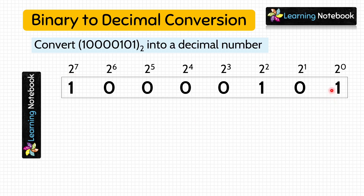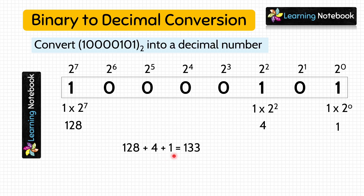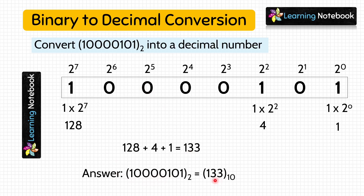Next, we multiply each digit by its place value, only multiplying by 1s since multiplication by 0 is always 0. 1 × 2⁰ = 1. 1 × 2² = 4. And 1 × 2⁷ = 128. In the last step, we add these three products: 128 + 4 + 1 = 133. We have converted this binary number into decimal number 133.